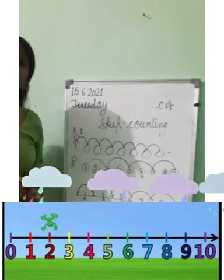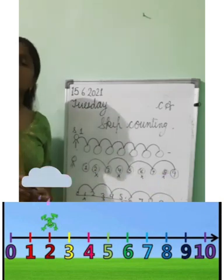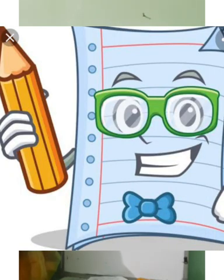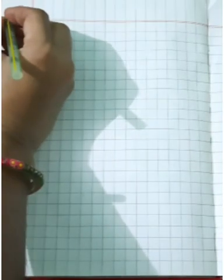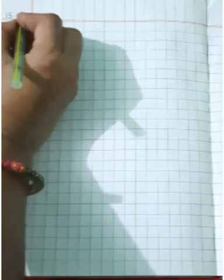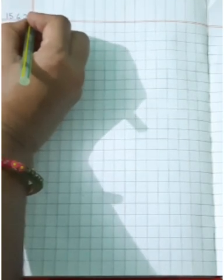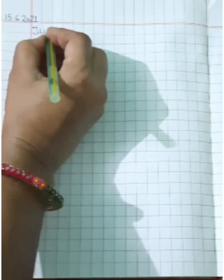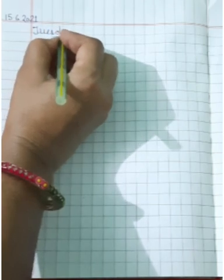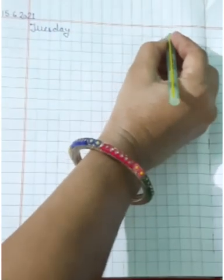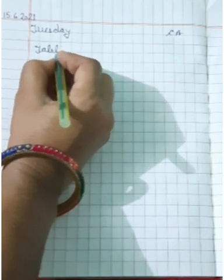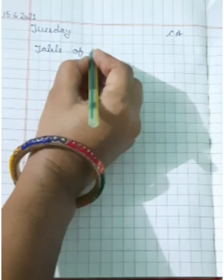Today we will do skip counting by twos and table of two. So, open your notebook and take your pencil. Mention date 15 June 2021. And what is the day? Tuesday. Now, you will write here CA.